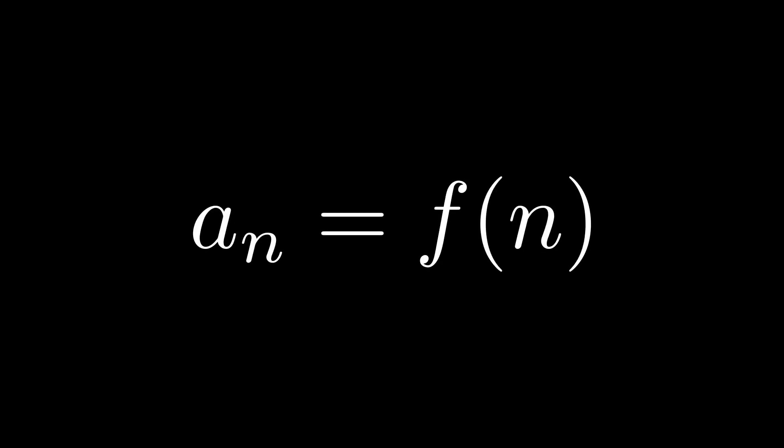We have two ways to define a sequence: a direct way and an indirect way. A sequence can be defined using a direct formula, also called an explicit formula or closed formula. This formula provides a way to calculate the value of any term in the sequence directly without having to calculate all the previous terms. The general form is: a_n = f(n), where a_n is the nth term and f is a function that describes how to calculate the term of index n.